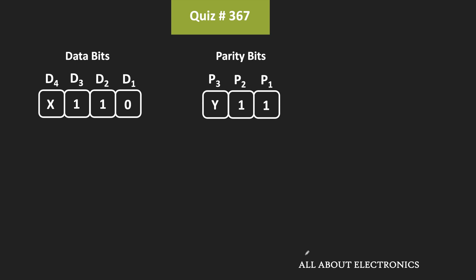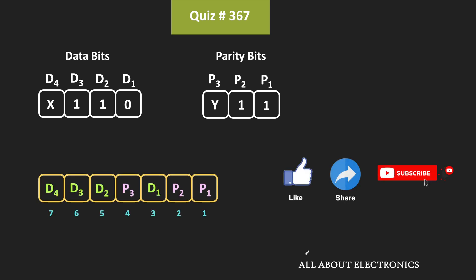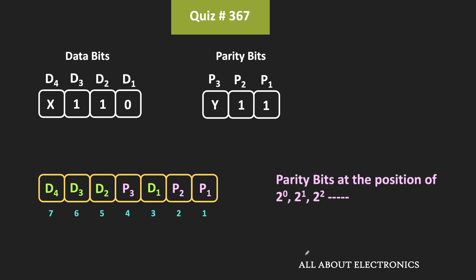First of all, let us write down these data bits and the parity bits in the 7-bit Hamming code form. As we know, these parity bits are placed at the positions which are in the power of 2. And the remaining bits are the data bits, where D4 is the MSB and D1 is the LSB. Let us put the values of these data bits and the parity bits in this given code.